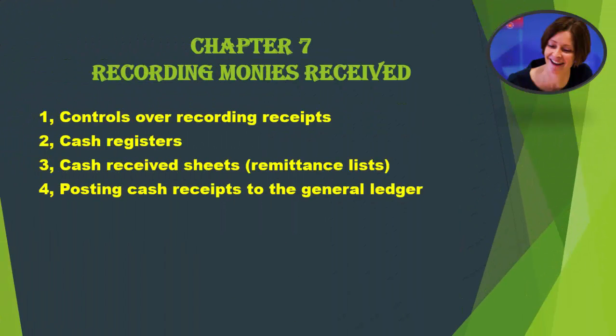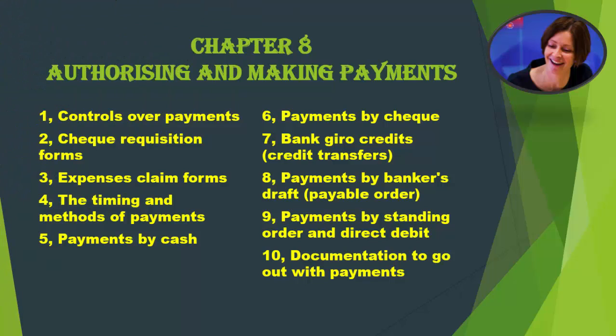Chapter 7: Recording Monies Received. Topics include: Controls Over Recording Receipts; Cash Registers; Cash Received Sheets and Remittance Lists; and Posting Cash Receipts to the General Ledger.